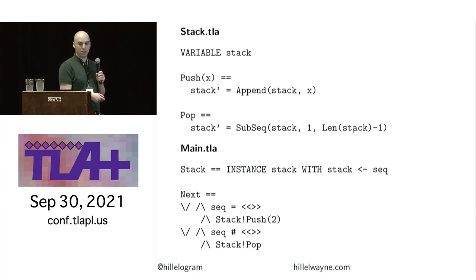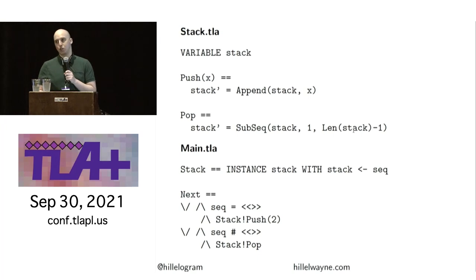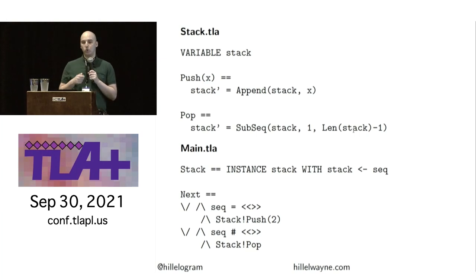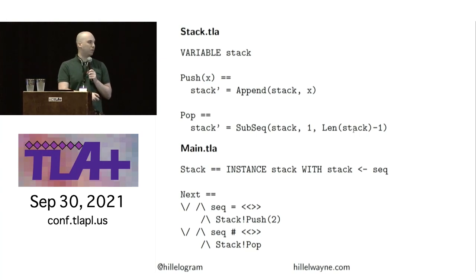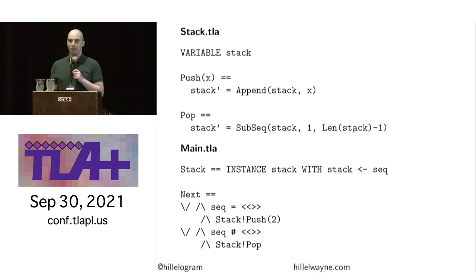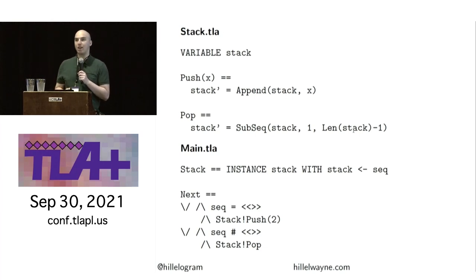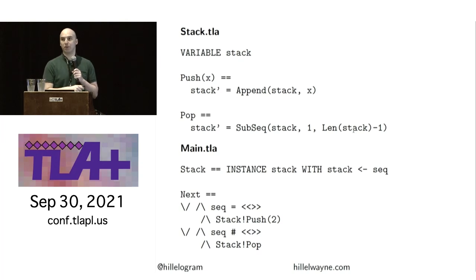I can now change next to just being stack!push and stack!pop. Because the instance is defined over 'seek,' these actions will update 'seek.' I'd again run this and check I'm getting the exact same state space. Now I have these two actions, push and pop, that are essentially the methods for the abstract data type. My next step will be to enforce that these are the only things that can happen to the ADT — I cannot do anything else but call these methods.